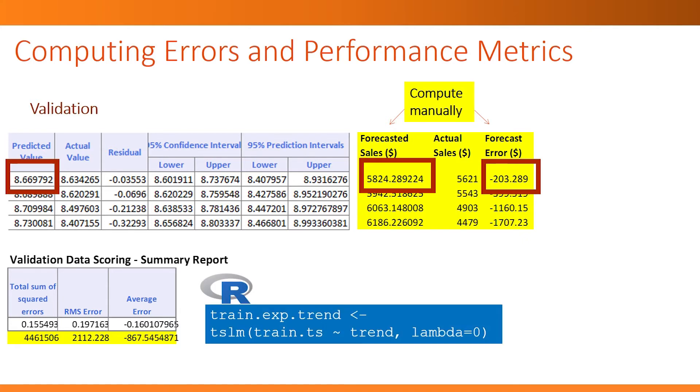In R, if you're using the TSLM function in the forecast package, set lambda equals to 0 for a log transform of the series. The good news is that the software will report all the forecast errors and the metrics in the original scale, so you don't have to do the manual calculation that we showed in these last two slides.